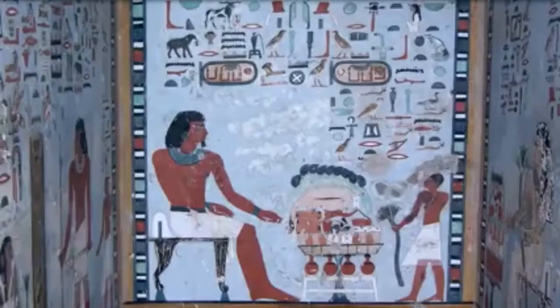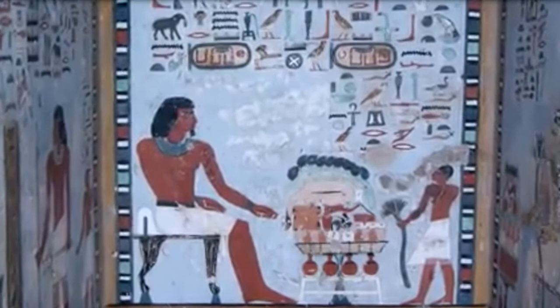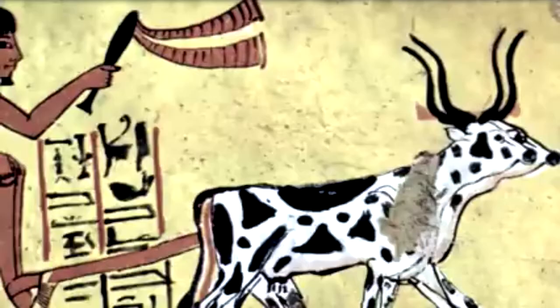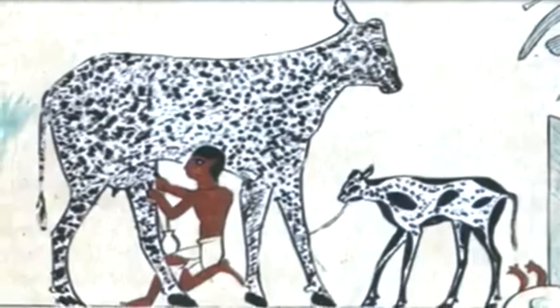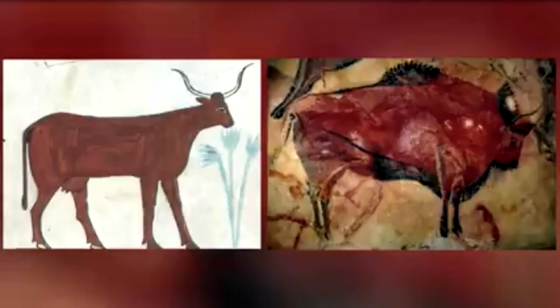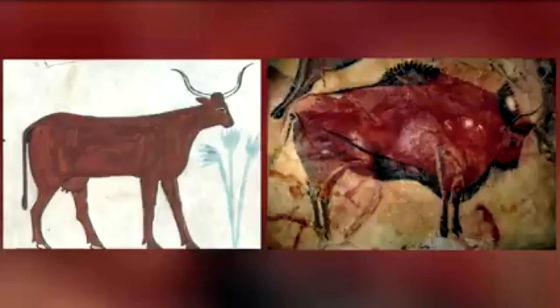Egyptians created the first-ever portraits of individuals. The sizes of different figures were highly symbolic in ancient Egyptian art. Pharaohs, for example, were often the largest figures in any painting, symbolizing their dominance and power. The smallest figures were usually the common people.